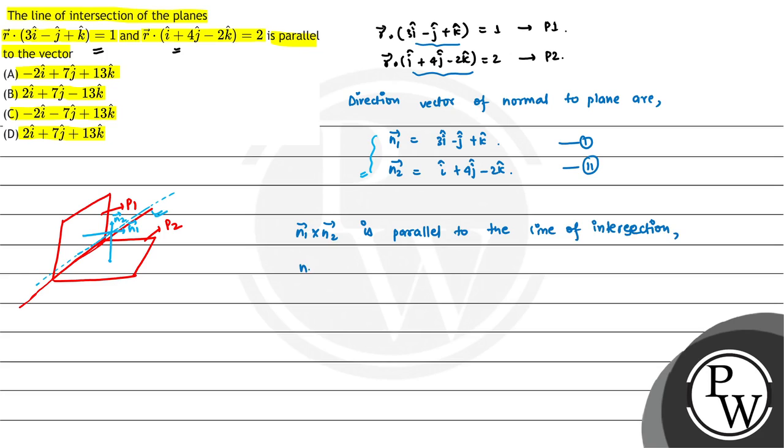This is our n1 cross n2. What will be? i, j, k; 3, -1, 1; 1, 4, -2.